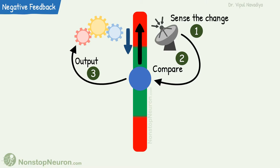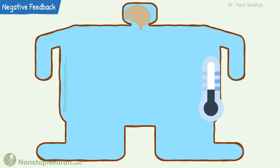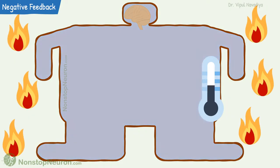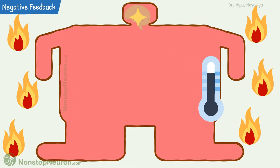Let's understand this with control of body temperature. We have thermoreceptors in skin that detect the temperature. When there is rising body temperature, it is detected by these receptors. The signals are then sent to the brain. The brain compares it with the setpoint and says it's a rise in temperature, so we need to decrease it.